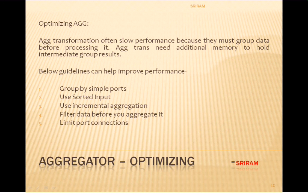Guidelines to improve aggregator performance: group by simple ports, use sorted input, use incremental aggregation, filter data before aggregation, and limit port connections. For group by, use simple columns - prefer numbers instead of strings or dates, and avoid complex expressions in aggregate expressions. For filtering, place a filter transformation or source qualifier filter before the aggregator transformation to reduce unnecessary aggregation groups.